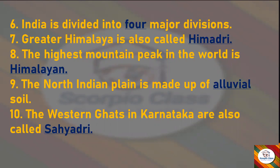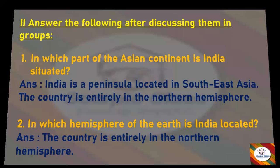Seventh: The Greater Himalaya is also called — answer: Himadri. Eighth: The highest mountain peak in the world is — answer: Himalayan (Mount Everest). Ninth: The North Indian Plain is made up of — answer: alluvial soil. Tenth: The Western Ghats in Karnataka are also called — answer: Sahyadri. Those were the fill in the blanks; now let's move to the next section: Answer the Following Questions.